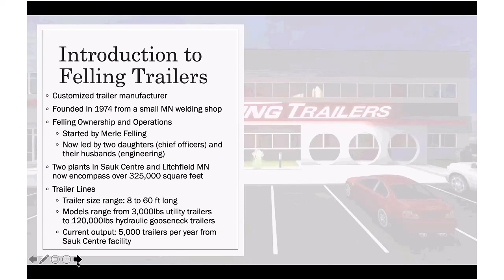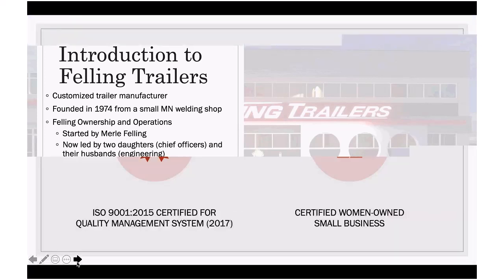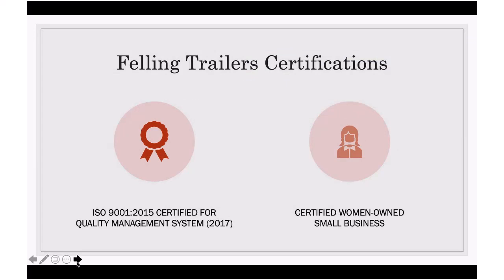Their trailer size ranges from eight to sixty feet long. Models range from 3,000 pound utility trailers to 120,000 pound hydraulic gooseneck trailers. Current output is 5,000 trailers per year from the Sauk Center facility. Their certifications are quality management systems and women-owned small business qualification.